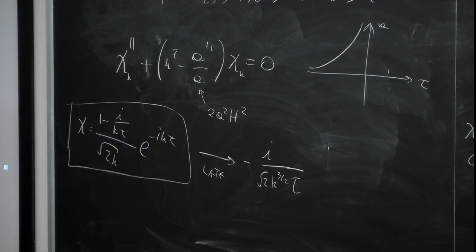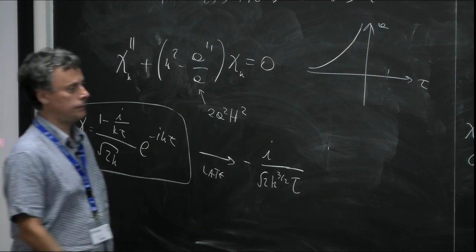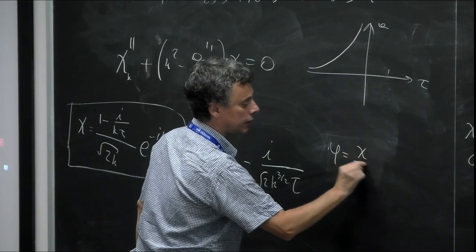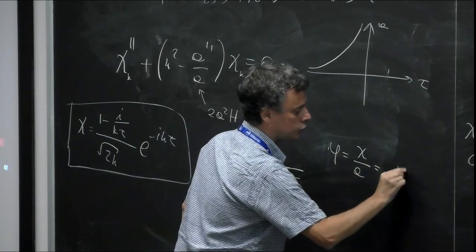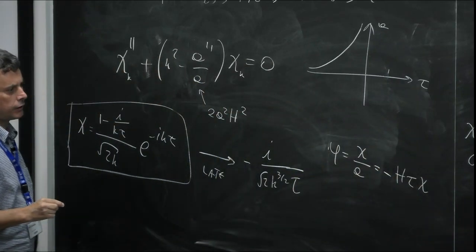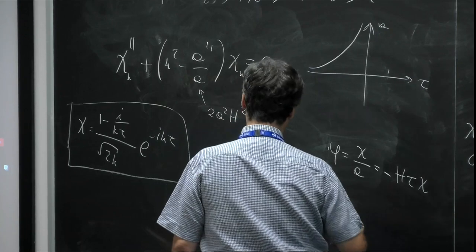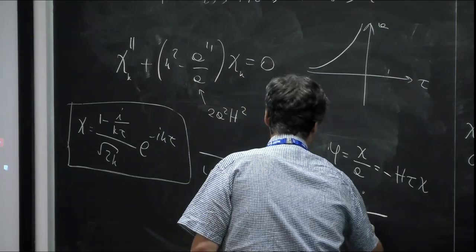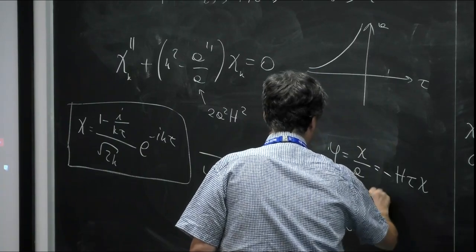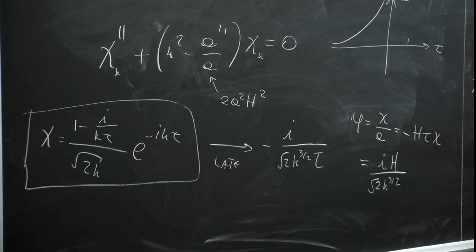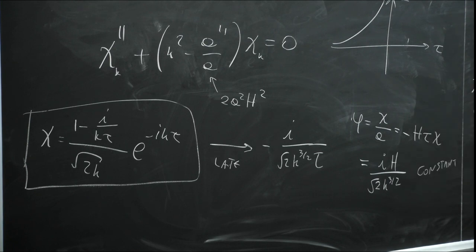The original field was φ = χ/a = −Hτ · χ, because that's what the scale factor is. Putting everything together, φ goes as i·H / [√(2k) · k^{3/2}]. We see that indeed the field becomes constant — this is the frozen field I was telling you yesterday. There's no more dependence on time: the field oscillates inside the horizon and then freezes to a constant value.